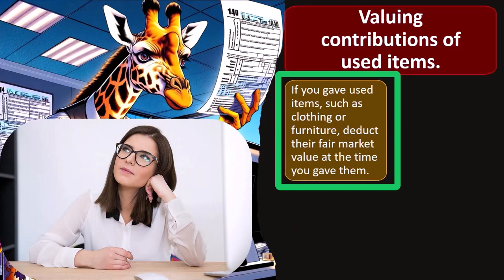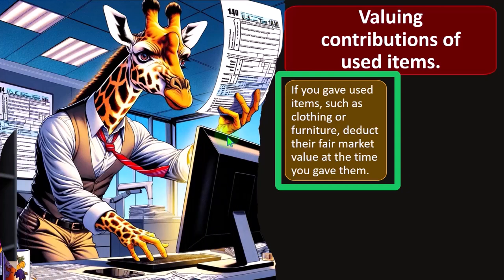You gave something to charity that was a used item. That's going to be a little bit more difficult to deal with than just giving a cash value to the charity, because when you give cash, a check, or an electronic transfer, we know how much was given. But if something given was a used item, it still has some value, or else the charitable organization theoretically wouldn't want it. If you give used items such as clothing or furniture, deduct the fair market value at the time you gave them.